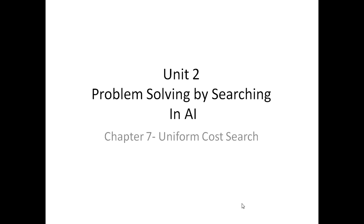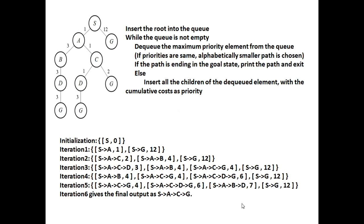Welcome to our next chapter on uniform cost search. Previously we discussed different kinds of uninformed search, and uniform cost search is one of the best searching algorithms when we are not using heuristics. It uses a priority queue and selects the best path according to the specific weights, so let's see how uniform cost search works.